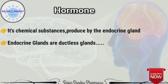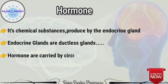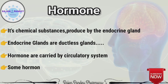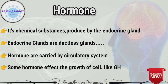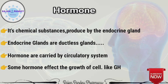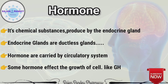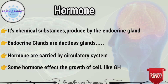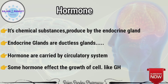Endocrine hormones are carried by the circulatory system to cells throughout the body. Some endocrine hormones affect many different types of cells. For example, growth hormone, which is secreted from the anterior pituitary gland, causes growth in most parts of the body. Excess secretion of growth hormone may lead to gigantism.